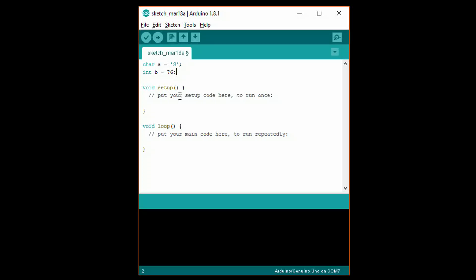In setup, write serial.begin, open parentheses, 9600, close parentheses, semicolon. This will initialize a serial port connection to our computer. Then, in loop, write serial.print, open parentheses, A, close parentheses, semicolon. And serial.println, open parentheses, B, close parentheses, semicolon, followed by delay1000.